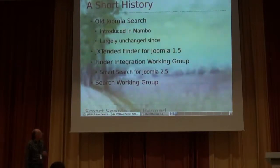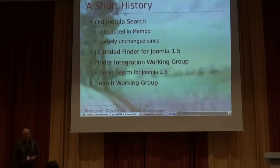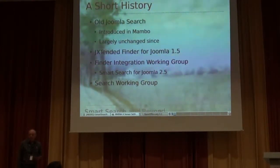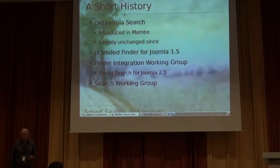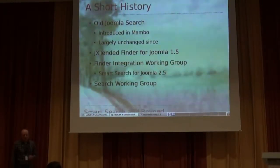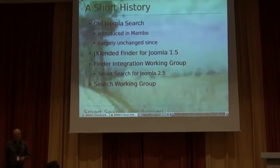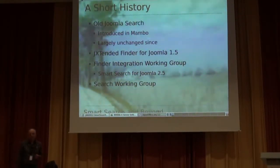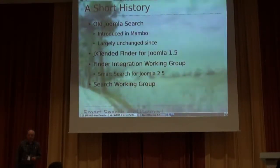The next big step occurred really when J-Extended people produced their Finder component, which was written for 1.5 specifically. A lot of people liked that — I liked it particularly. I didn't actually start using it until it reached version 2, but when I started using it, I thought: yeah, we really need to have this sort of technology in Joomla. And the J-Extended team very graciously allowed us to take that component when they moved to eBay and incorporate it into the core. Starting from the last PLT summit back in October, we decided to set up the Finder integration working group to actually bring that code into the Joomla core.